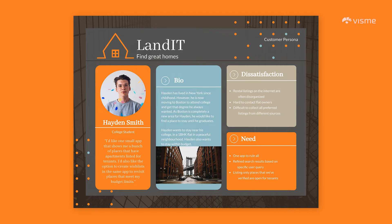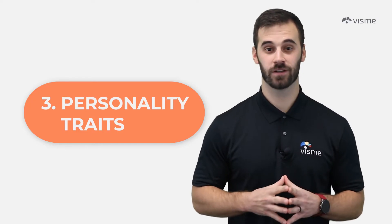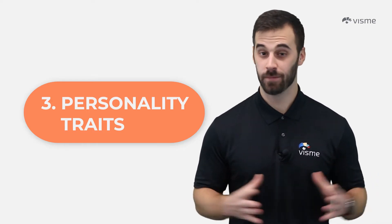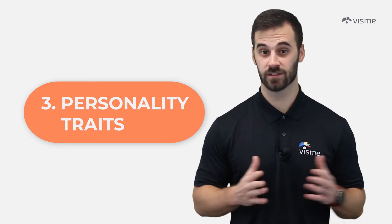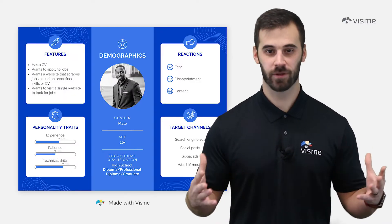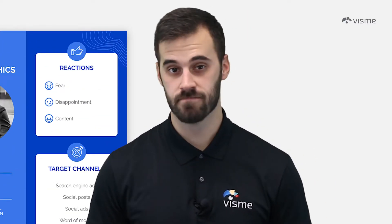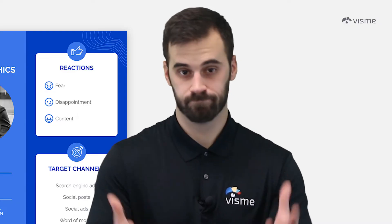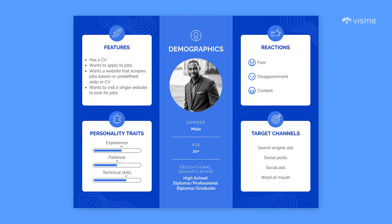You want somebody like Hayden, a college student who's also in need of finding a rental property. The third element to include are personality traits. A picture may say a thousand words, but you also don't want to judge a book by its cover. So describe their personality — are they funny, serious, professional, introverted? This user persona features what he's looking for, his personality traits, and even how he would react in most situations.